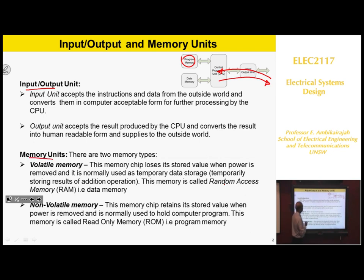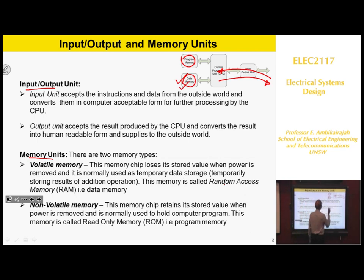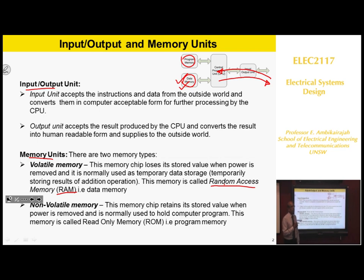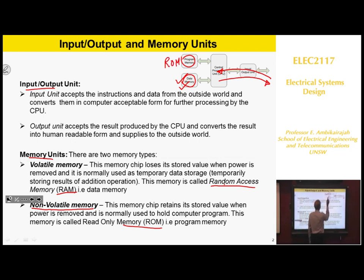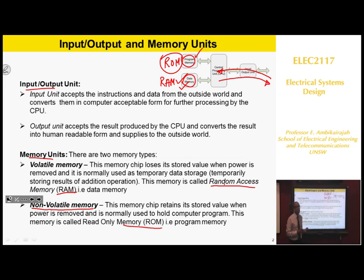There are two types of memory unit. One is volatile memory, which means when you turn off the power it loses its information. We call this RAM — random access memory — which is a data memory where you can store data, but when you turn off the power it loses its data. The second type is non-volatile memory, which we call read-only memory, where we store the program. Even if you turn off the power, it will hold the information. So in most computers you will have both types of memory.